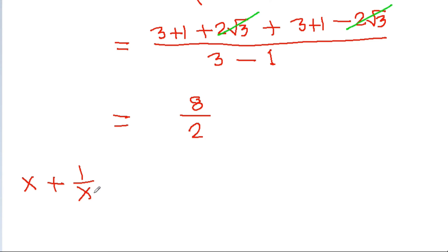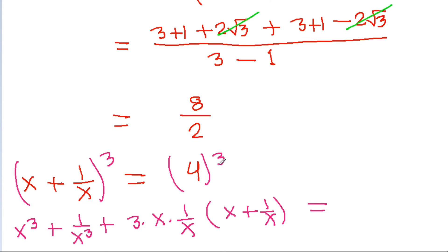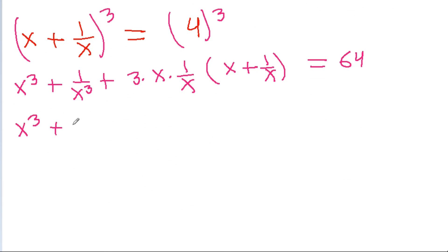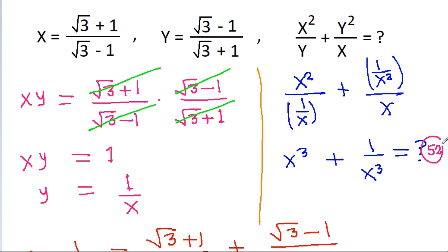So x plus 1 by x is equal to 4. If we cube both sides, then x plus 1 by x cubed equals x cubed plus 1 by x cubed plus 3 times x times 1 by x times x plus 1 by x, which equals 4 cubed equals 64. The x and 1 by x cancel, giving 3 times x plus 1 by x equals 3 times 4 equals 12. So x cubed plus 1 by x cubed equals 64 minus 12 equals 52.